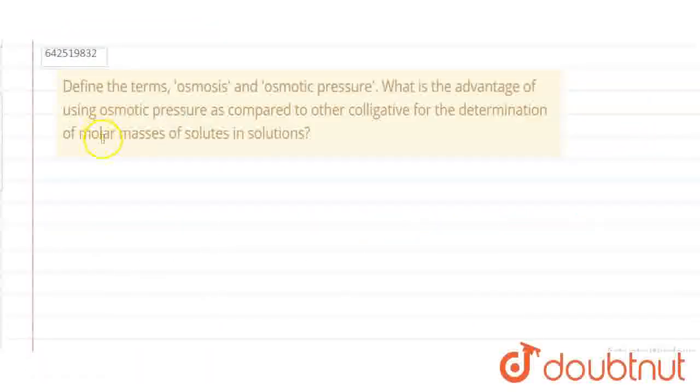The question says, define the terms osmosis and osmotic pressure, and what is the advantage of using osmotic pressure as compared to other colligative properties for the determination of molar mass of solute in solution?